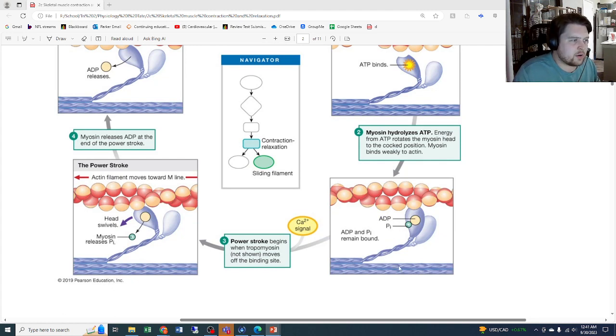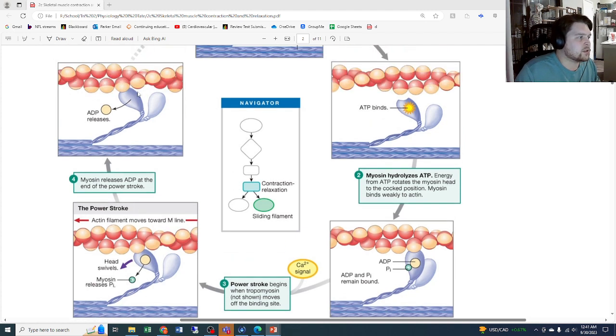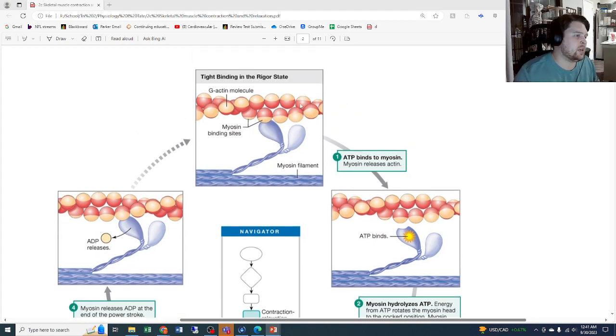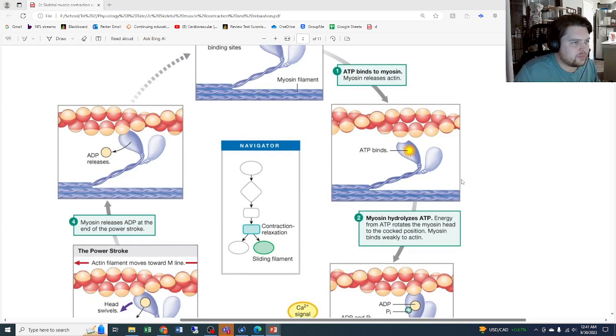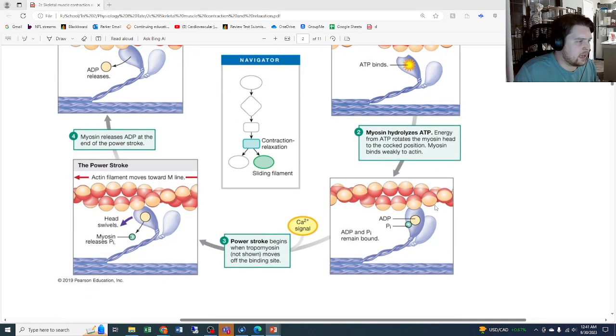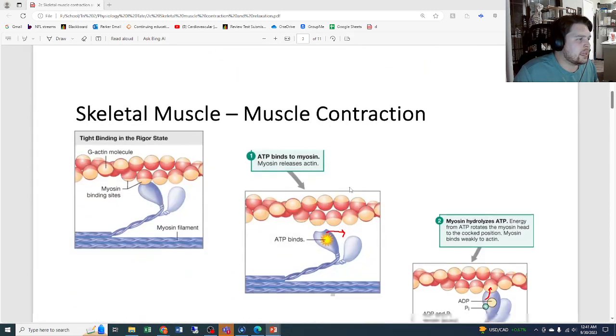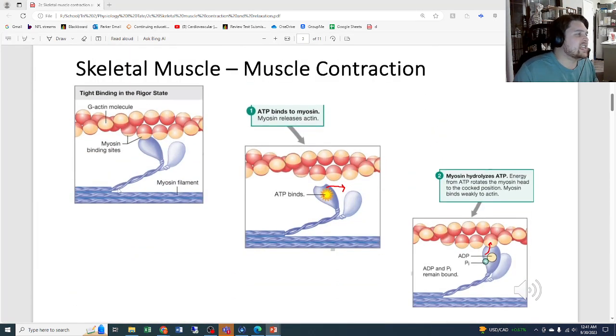Once the ATP has been broken down and it's been re-cocked, it binds back onto the actin and you get the power stroke. The power stroke is that pulling where it pulls the actin along. You get a little head swivel and the myosin releases the phosphorus in that process, and also the ADP. The myosin will release the ADP at the end of the power stroke, thus leaving it in this bound state again, just waiting for another ATP to come along and bind to it to allow it to release and perform that action again and again and again as that muscle contracts.